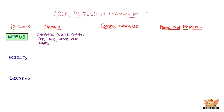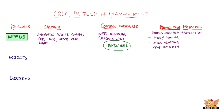Weeds. Weeds are unwanted plants that compete for food, space and light. They can be mechanically removed or can be controlled by limited use of pesticides called herbicides. Weeds can be prevented from growing by proper seed bed preparation, timely sowing of seeds, intercropping and crop rotation.